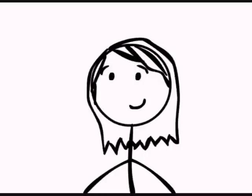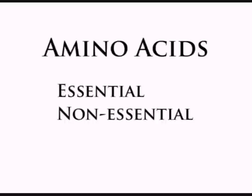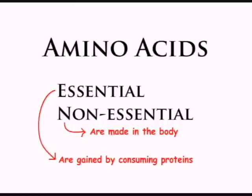Before I get back to the flower, I want to change gears and introduce a few key terms, starting with amino acids. Amino acids come in two basic forms: essential and non-essential. Non-essential ones are made in the body, whereas essential ones are gained by consuming proteins.